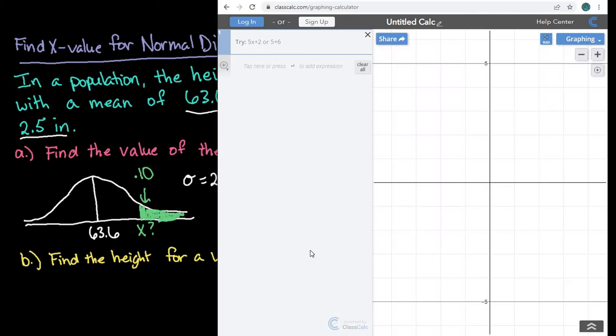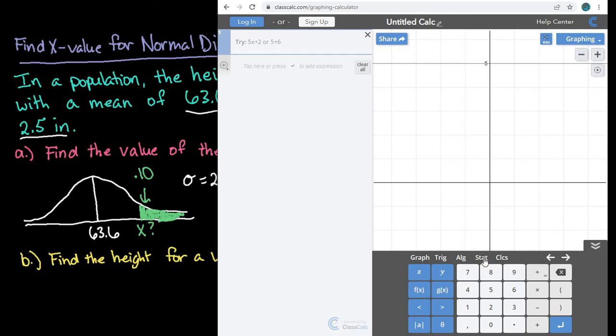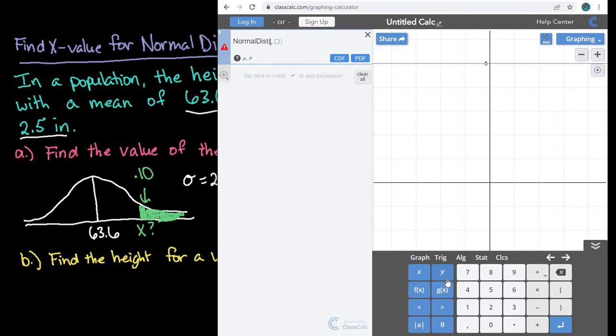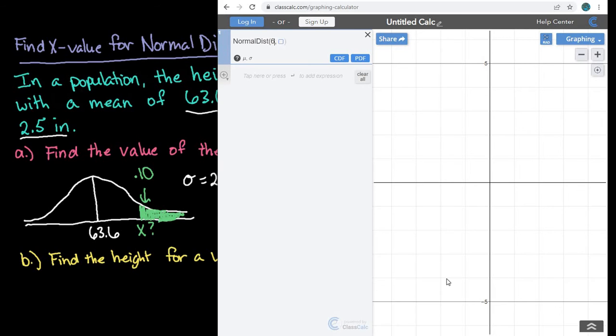What we're going to do is we're going to grab the calculator. It's classcalc.com backslash graphing-calculator. When you get in here, you're going to open up your menu and we're going to go to stat and we're going to go to the distribution plot. The first thing that we're going to do is the normal distribution and we're going to put in our mean of 63.6 and our standard deviation of 2.5.